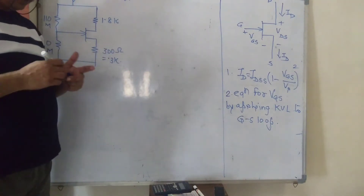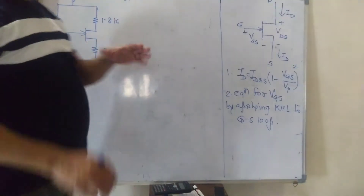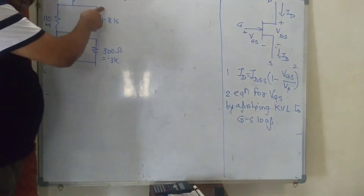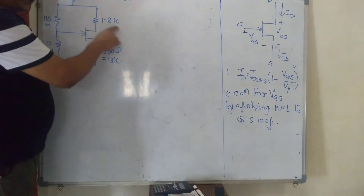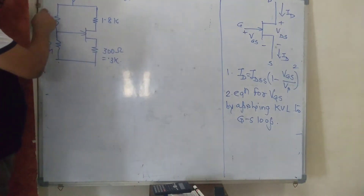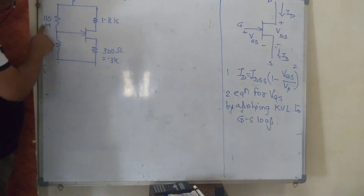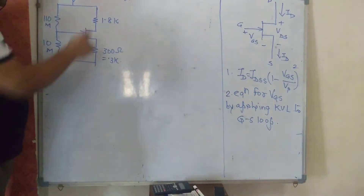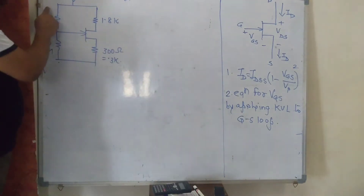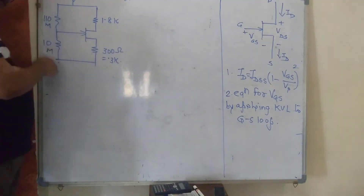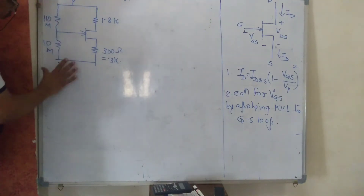In FET, you have to convert resistor values to kilo ohms. All resistors must be in kilo ohms. For example, 1.8K and 300 ohms — I divide 300 by 1000 to get 0.3K. However, these two gate resistors must be in the same unit — either both in mega ohms or both in kilo ohms. Here both are already in mega ohms, so no need to convert.